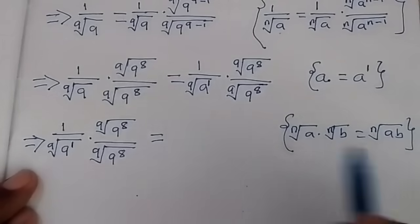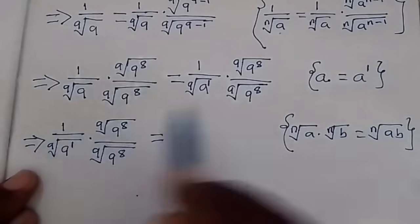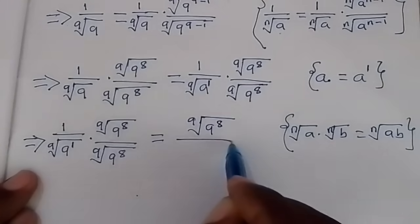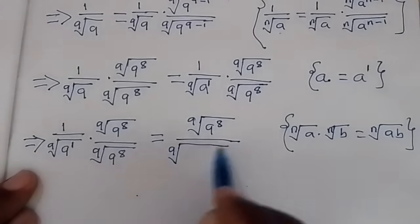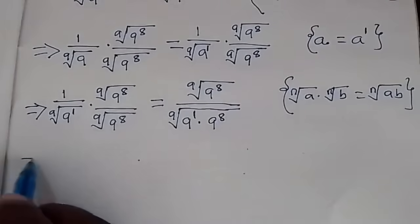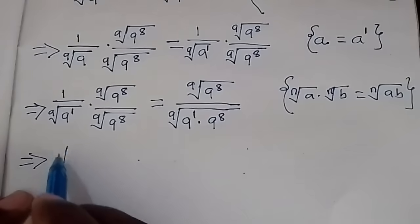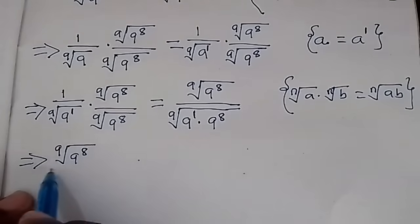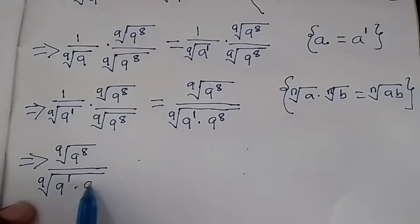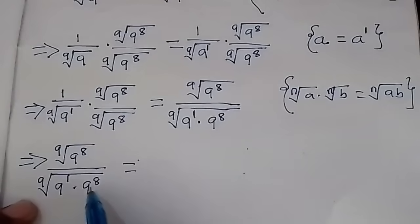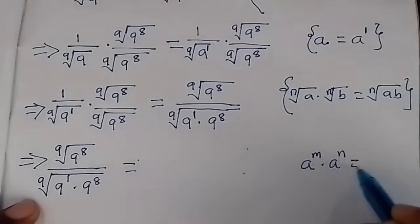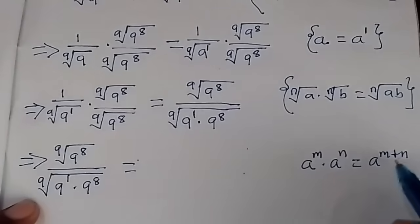By the definition of this rule, the denominator becomes the 9th root of 9 to power 8, over the 9th root of 9 to power 8. Then we apply the rule that A raised to power M times A raised to power N is the same as A raised to power M plus N — when the bases are the same, you add the exponents.